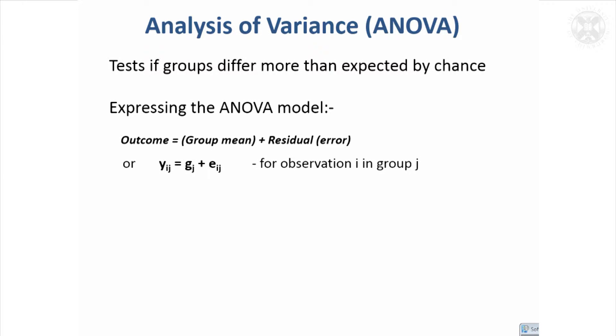Analysis of variance aims to test if your groups differ more than expected by chance. A simple way of expressing the overall ANOVA model would be like this: you've got a measurement that you want to compare between the groups, which we'll call the outcome measurement.